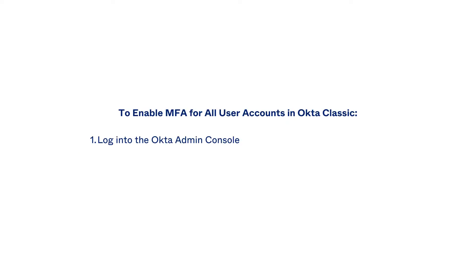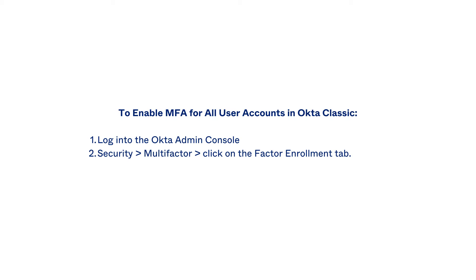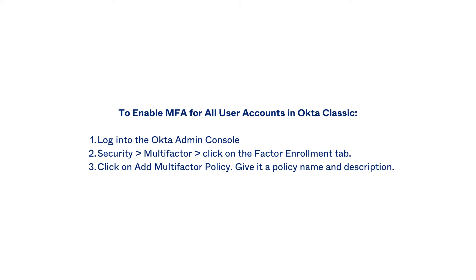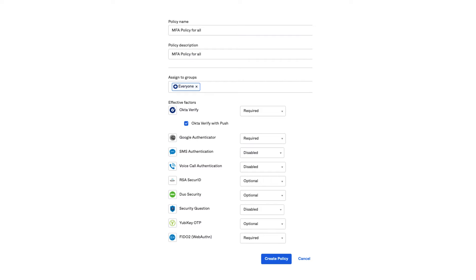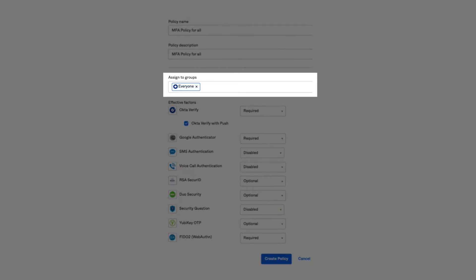Begin by logging into the Okta admin console. Navigate to Security, then Multi-Factor, and click on the Factor Enrollment tab. Click Add Multi-Factor Policy and give the policy a name and description. Select the group you'd like to apply the policy to. It's recommended to choose specific groups per your organization's security requirements rather than applying it to everyone. In this example, we're using the Everyone group.